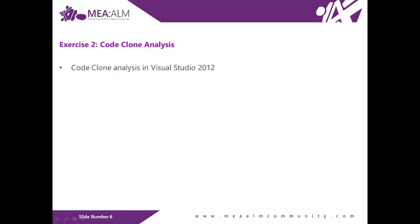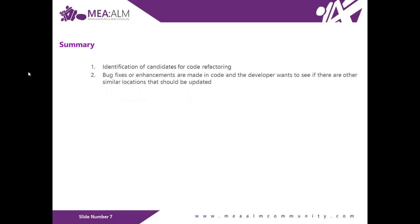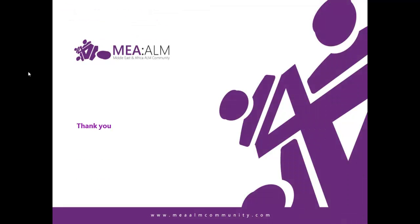In summary, there are three main scenarios where the identification of code clones may be useful to developers. First, identification of candidates for code refactoring — when bug fixes or enhancements are made in code and the developer wants to see if there are other similar locations that should be updated. Second, as a learning tool for a new developer starting on a new team project — for example, a developer adds code to update a customer record and wants to see if there are practices used by the rest of the codebase, such as using try-catch blocks. That's the end of Exercise 2 and the end of the lab. Thank you for watching.